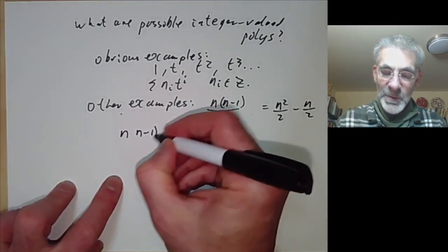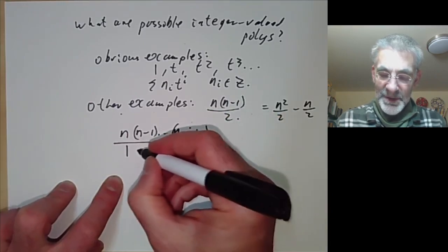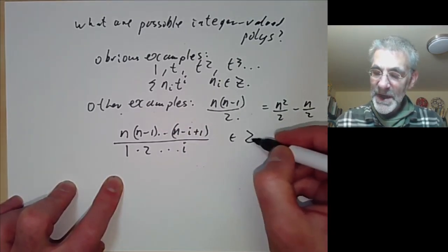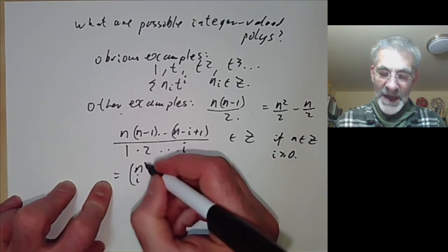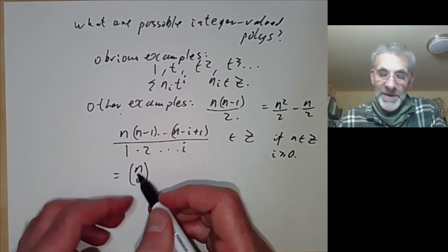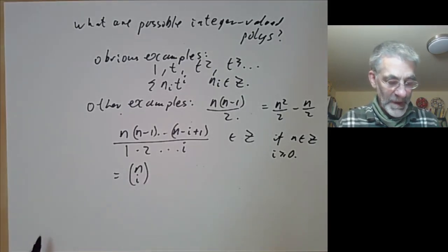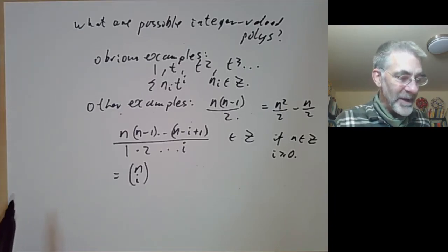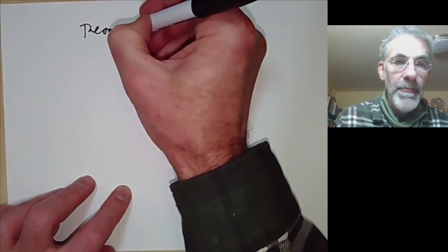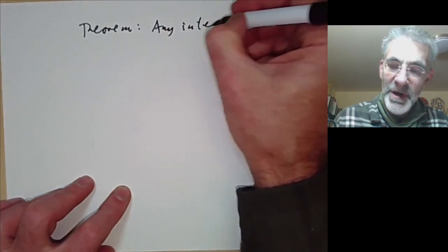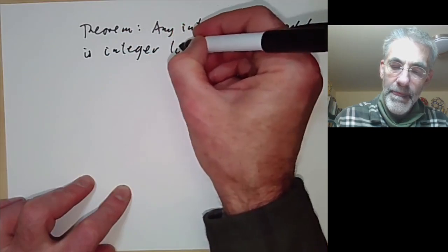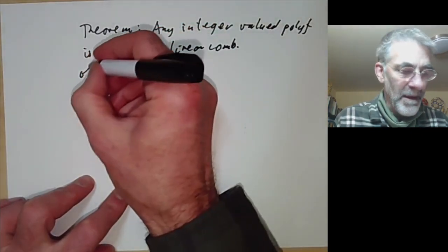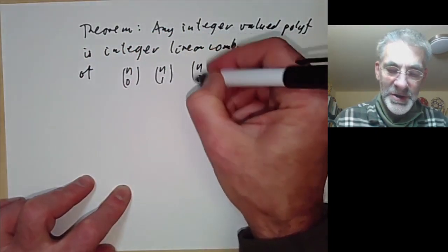More generally, n(n−1)···(n−i+1) / (1·2···i) is always an integer if n is an integer and i ≥ 0. That's because this is just the binomial coefficient C(n, i), which is an integer because it counts the number of ways of choosing i elements from n. So we can ask: are there any other integer valued polynomials? The answer is no — this gives all of them. Any integer valued polynomial f is an integer linear combination of C(n,0), C(n,1), C(n,2), and so on.